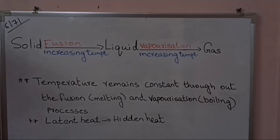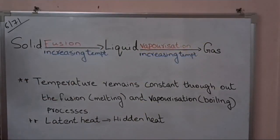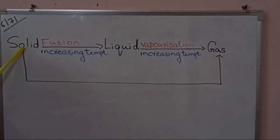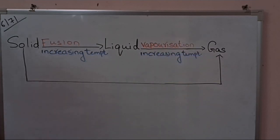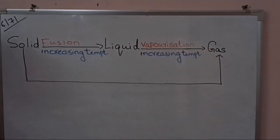We had learned this in our previous class — on increasing temperature, we can convert solid to liquid and liquid to gas. But does solid change directly to gas without going to a liquid state? Yes, there are certain substances that change from solid state to gaseous state without changing into liquid state.